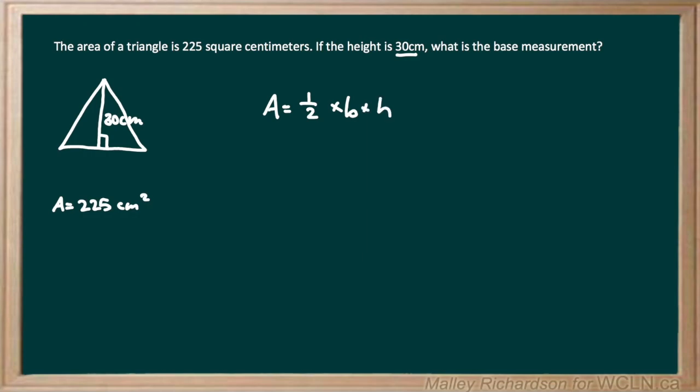Now let's fill in this formula with what we know. We know that our area is 225 centimeters squared. Then we have 1 half. We don't know our base, but we know our height is 30 centimeters.